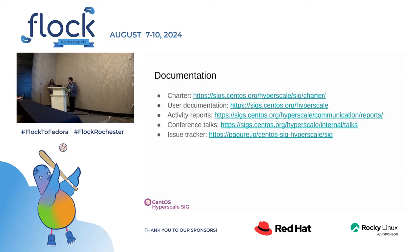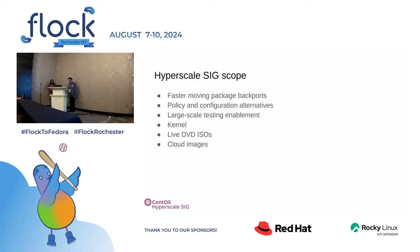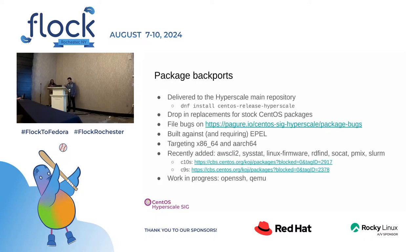What do we actually do? We use the SIG to carry backports of packages that want to move faster than CentOS Stream itself. We also track packages that have deviations in terms of policy and configuration. We leverage the SIG for large-scale testing and enablement, and finally we have work around the kernel, live DVD ISOs, and cloud images.